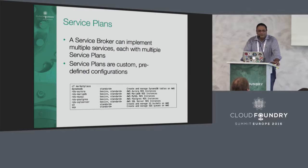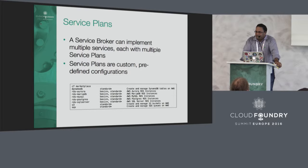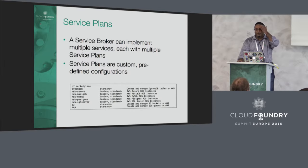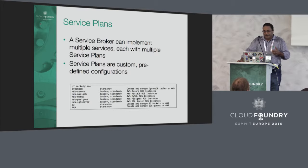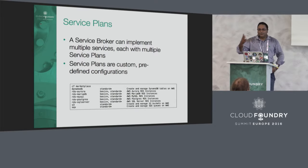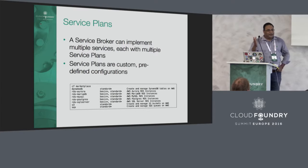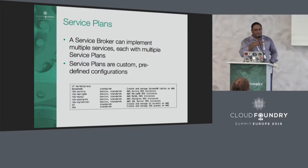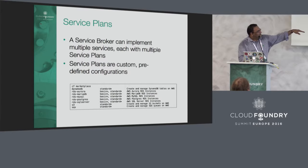CF marketplace is where the broker places services and you can list them all. The service broker can implement multiple services each with multiple service plans, many of which are custom or predefined configurations. Operators can define policies — for example, storage encryption across the board or on certain plans. You can have a configuration for development and one for production; the developer just picks a plan and it gets created along with all the settings — the VPC, security groups — in a typical workflow.